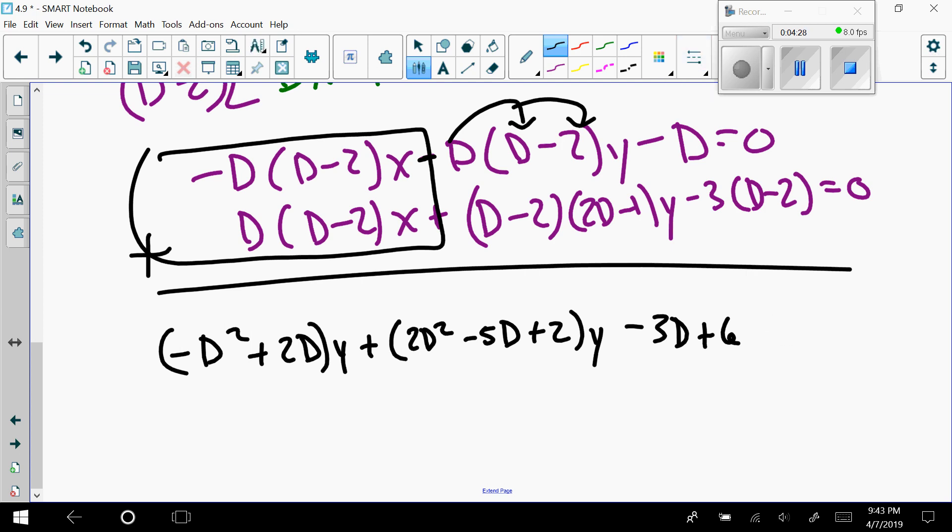And that also has a y there. Minus 3D plus 6 equals 0. Well, I shouldn't quite put this 0 here. Don't forget that I have this little D sitting out here too. When you're looking at this, there's no need to freak out. You see that these have y's, right? These two things. Well, then I should be able to combine them. This 2D squared and this negative D squared should make D squared. 2D negative 5D make a negative 3D, and then I have a plus 2. These all had y's.